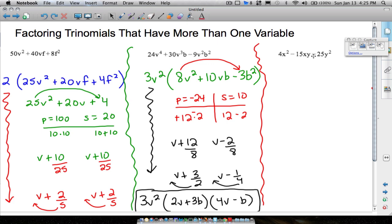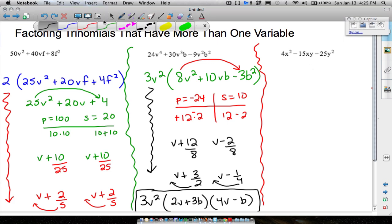Now these first two examples had GCFs in them. Not every problem is going to have a GCF. So in this case here, we can actually jump straight into bottoms up. Notice we have x squared, y squared, kind of like how we had the v squared, f squared. And then the xy in the middle, kind of like how we had the vf or the vb in the middle.